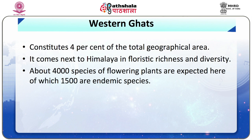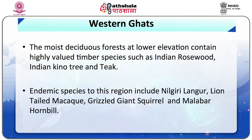Fifth are the Western Ghats, constituting 4% of the total geographical area. The Western Ghats biogeographic zone comes next to the Himalayas in floristic richness and diversity. About 4,000 species of flowering plants are expected here, of which 1,500 are endemic. The moist deciduous forests at lower elevation contain highly valued timber species such as Indian rosewood, Indian quino tree and teak. Some significant endemic animal species include Nilgiri langur, Lion-tailed macaque, Grizzled giant squirrel and Malabar grey hornbill.